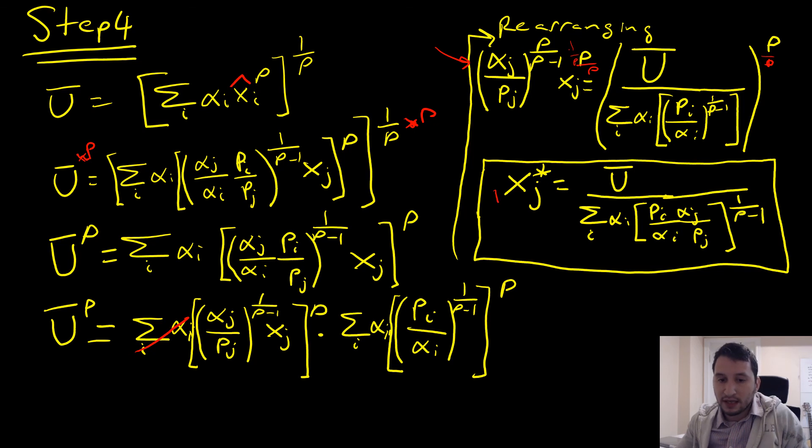which is as follows right here. So this is how you solve for your Hicksian demands in a n good case where our preferences are CES. I hope this video helps, take care.